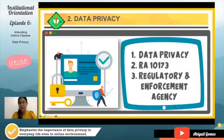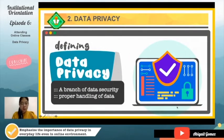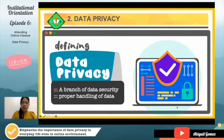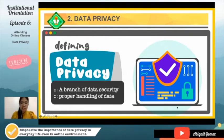So we only have three things to discuss for today: we have data privacy, we also have RA 10173, and also the regulatory and enforcement agency which we'll reveal later. So let's start by defining what data privacy is. From the word itself — data talks about information, privacy means it should not be out in the public. Therefore, data privacy or information privacy is a branch of data security — the data should be secured.